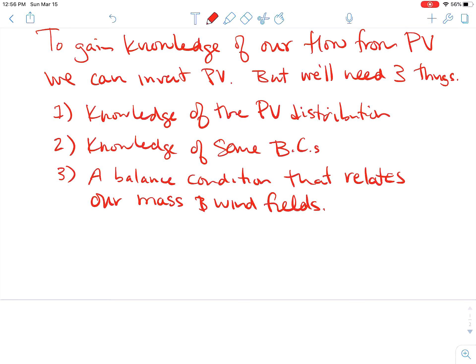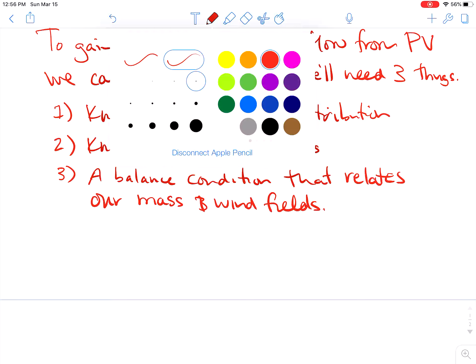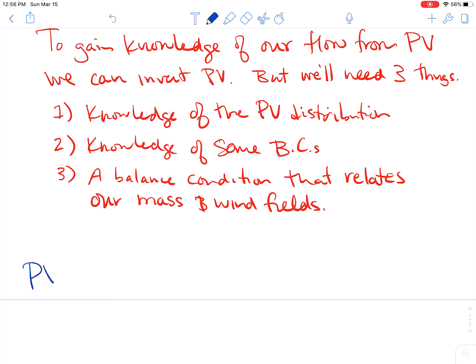then it is possible to go from our PV distribution to phi u v T omega, our vertical wind, and our stability within the domain. And so truly, from our initial PV distribution, we know everything about the atmosphere.